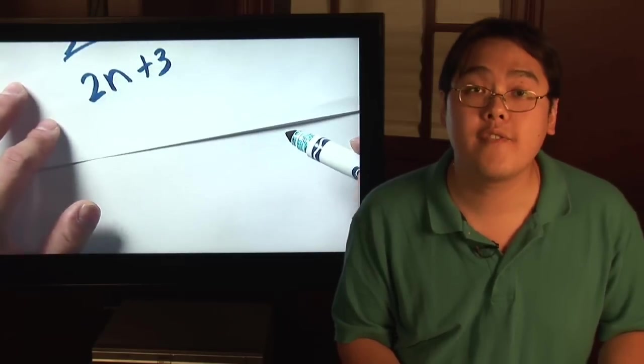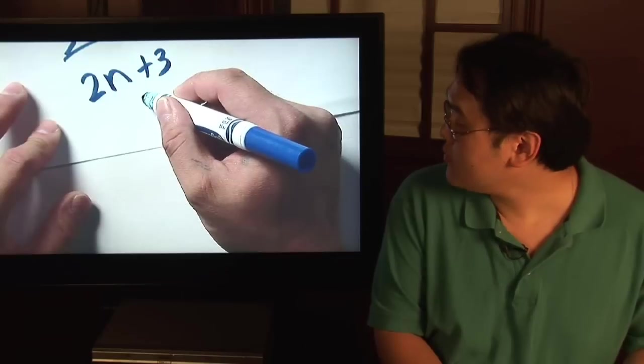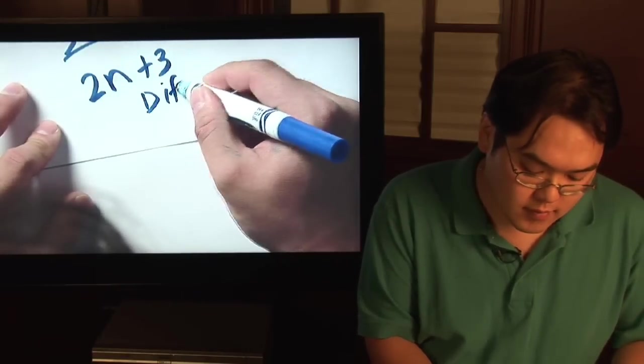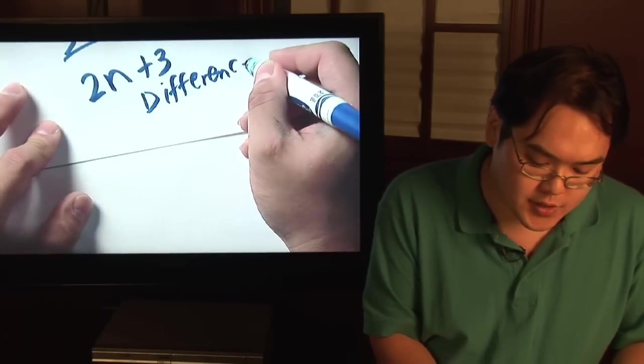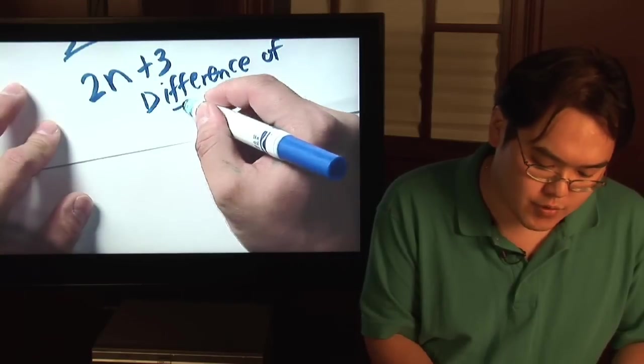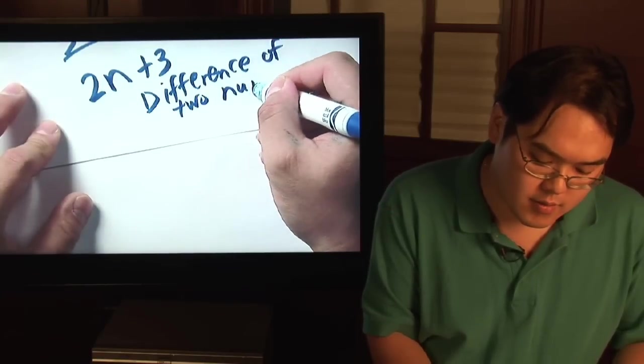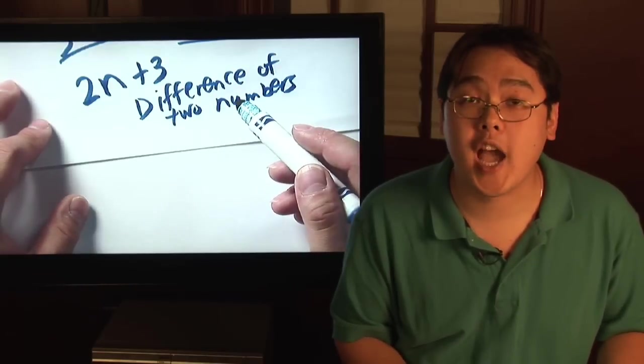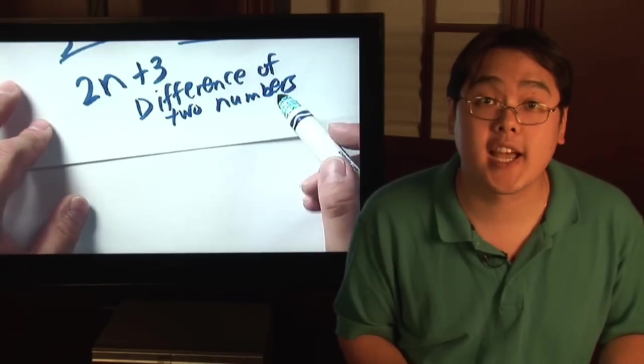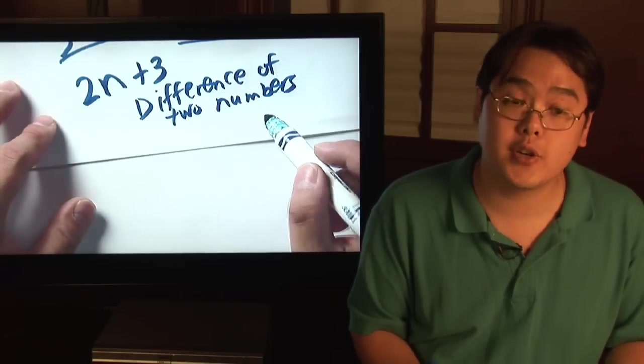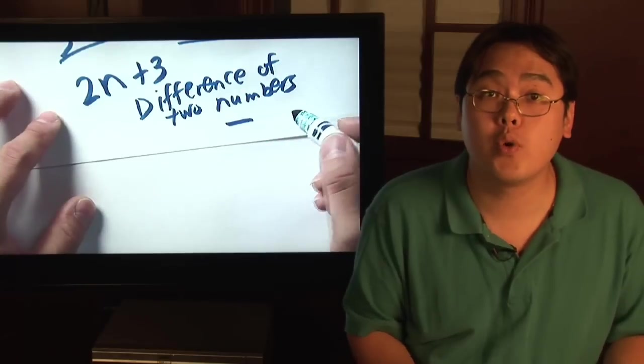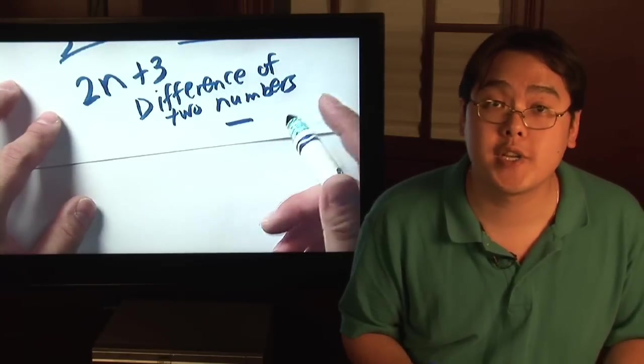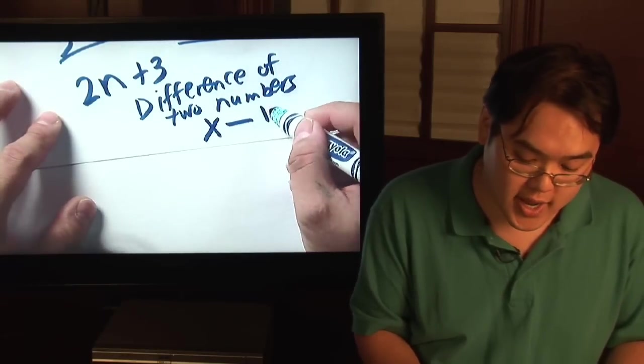Now one final example. Difference of two numbers. Now when you see difference you think of the operation subtraction. That's exactly what this means. Difference of two numbers is going to be subtraction. What would you call the two numbers? As long as you give them different letters, you'll be fine. Let's call them x and y.